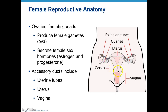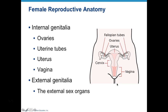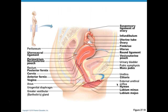Below the uterus, we have the vagina. Looking at a sagittal cut through the reproductive system, you can see the ovary on the lateral side, the fallopian tube connecting to the uterus, and the uterus leading to the vagina. Some external female reproductive structures are also visible here, including the clitoris, labia minora, labia majora, and the vestibular — or Bartholin's — glands.